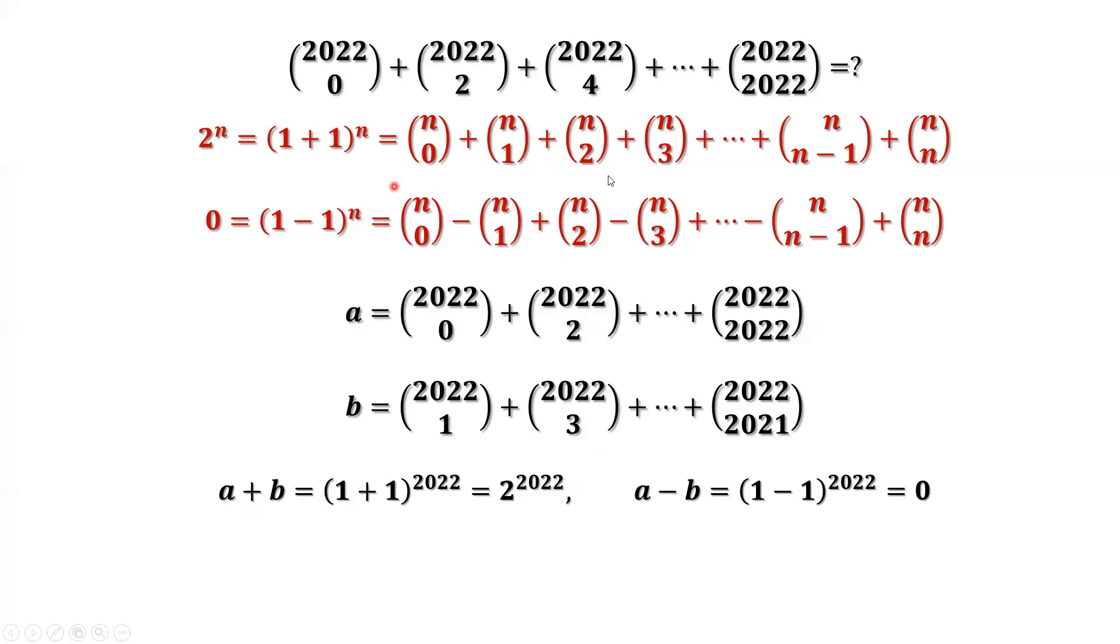From the second result, we can see that if we group the positive terms, the sum will be a. If we group negative terms, the sum will be b.